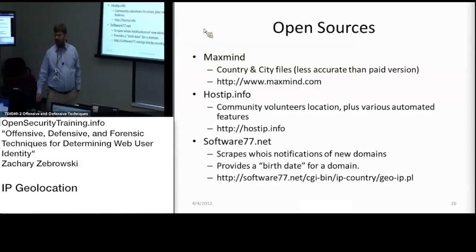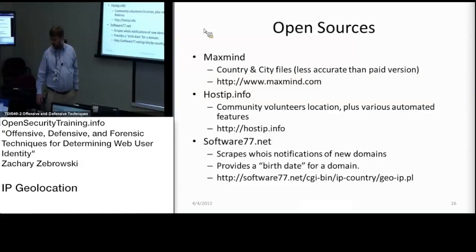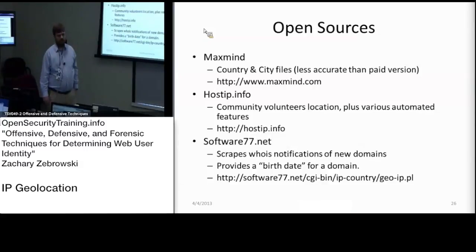This is a list of open sources that provide IP geolocation. MaxMind is a commercial company near Boston. They offer open source versions of IP geolocation as well as paid versions. The paid versions give you a lot more additional attributes for a picture of a particular IP address range. They also provide history going back to around 2003, if you ask them, for the files they produced over time.